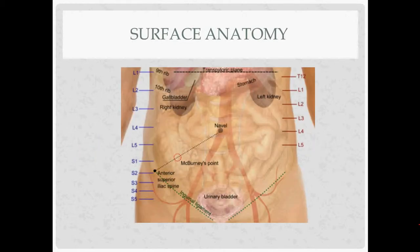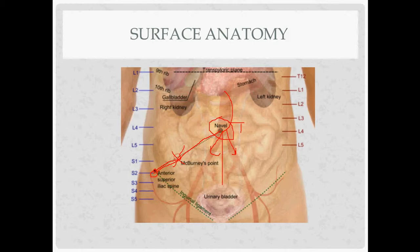Surface anatomy. The aorta divides at the level of the navel — the belly button — and T10 is the dermatome for the belly button. McBurney's point is one-third of the way between the anterior superior iliac spine and the navel, used for appendicitis. The arcuate line can be located similarly: go one-third of the way down from the belly button towards the pubic symphysis.